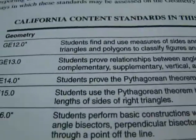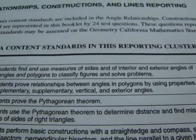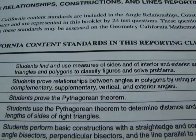Hi, and welcome to Standard 13. Standard 13 is kind of a fun one. It's relationships between angles. Let's read it. Standard 13. Students prove relationships between angles and polygons by using properties of complementary, supplementary, vertical, and exterior angles.